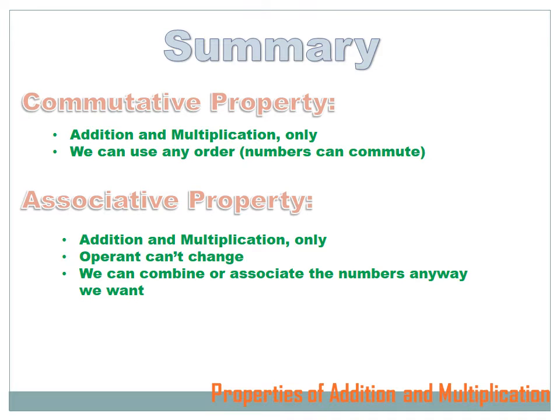In summary, we've talked about two rules. The commutative rule: it only works for addition and multiplication, and the numbers can be in any order — they can travel around the equation without affecting the results. The second property is the associative property. Again, this only works for addition and multiplication, not subtraction or division. The operands can't change — if we start out adding, we can't then multiply and change the associations. But so long as we are using the same operand, we can combine or associate the numbers any way we want.